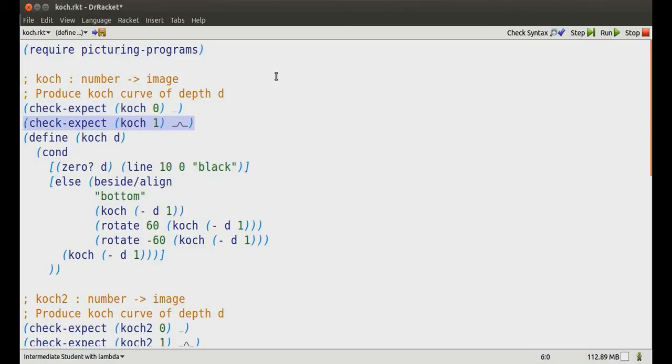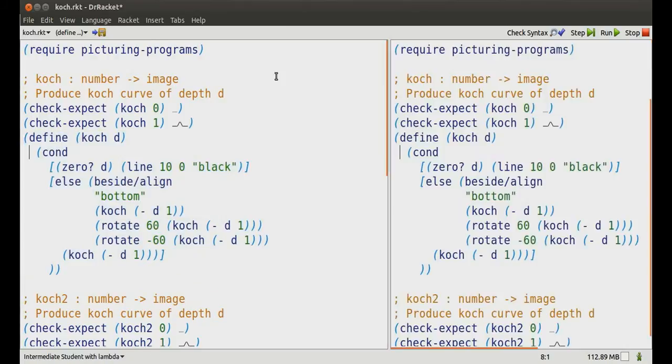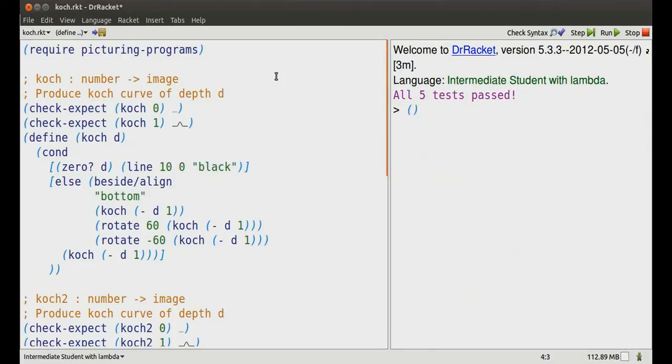There's what Koch 0 looks like. Koch 1 is just four copies of Koch 0 pushed together. Here's the definition. Let's figure out how it works by looking at small examples. Koch 0. Here's how you figure it out.